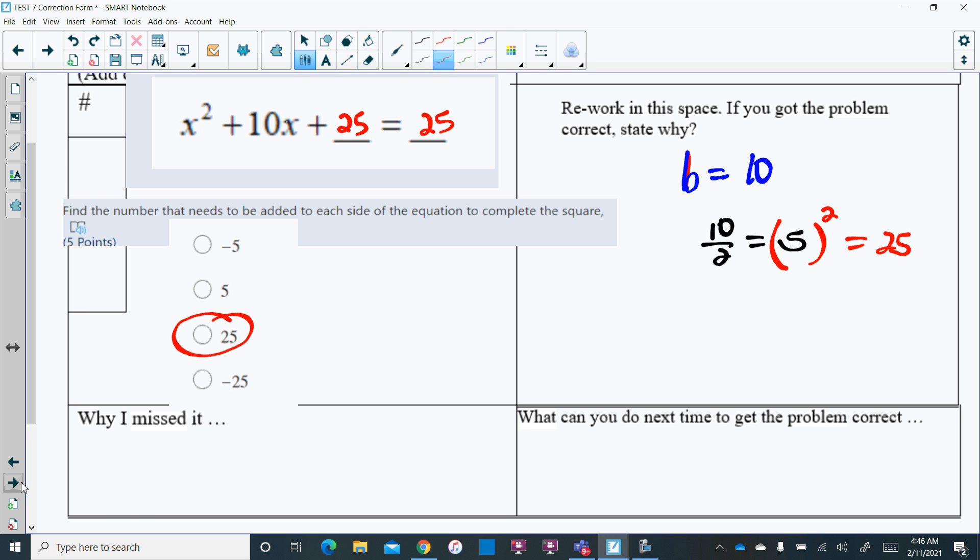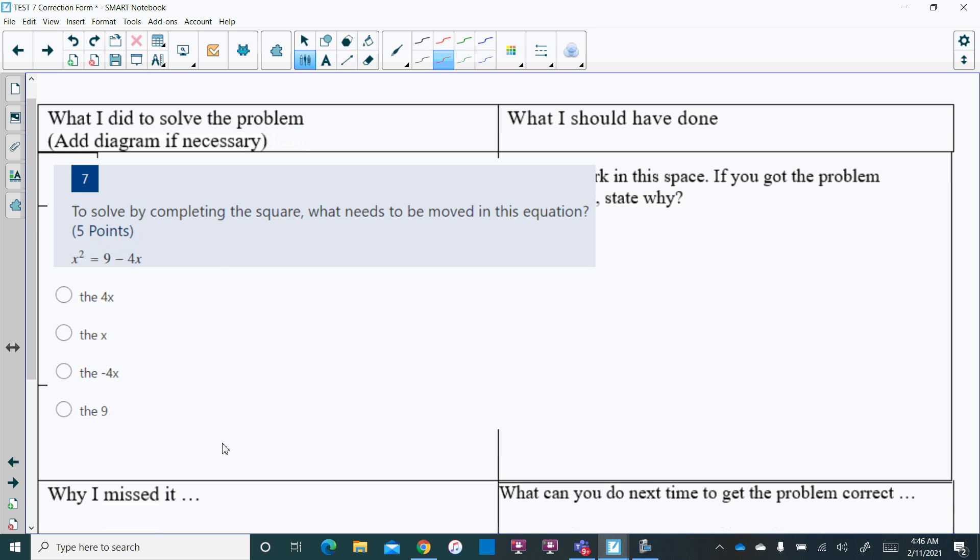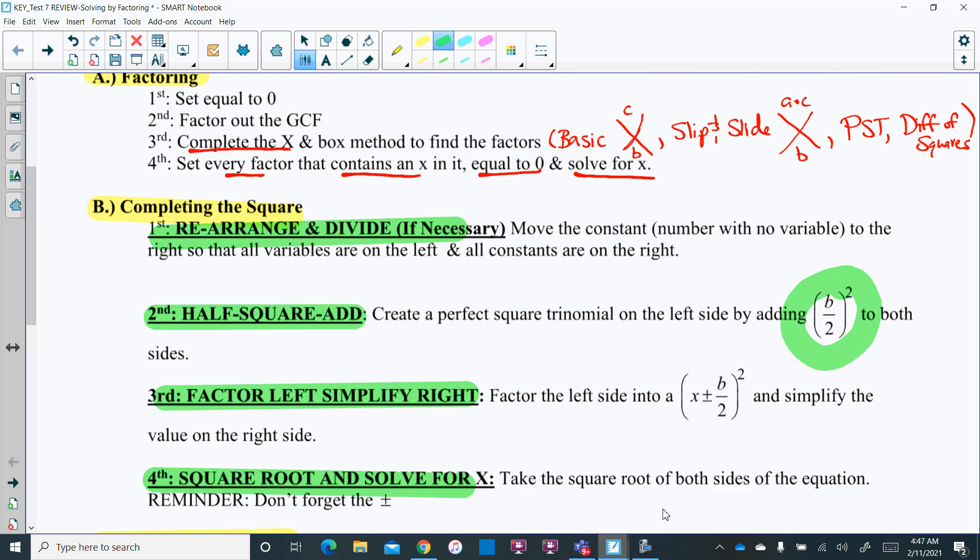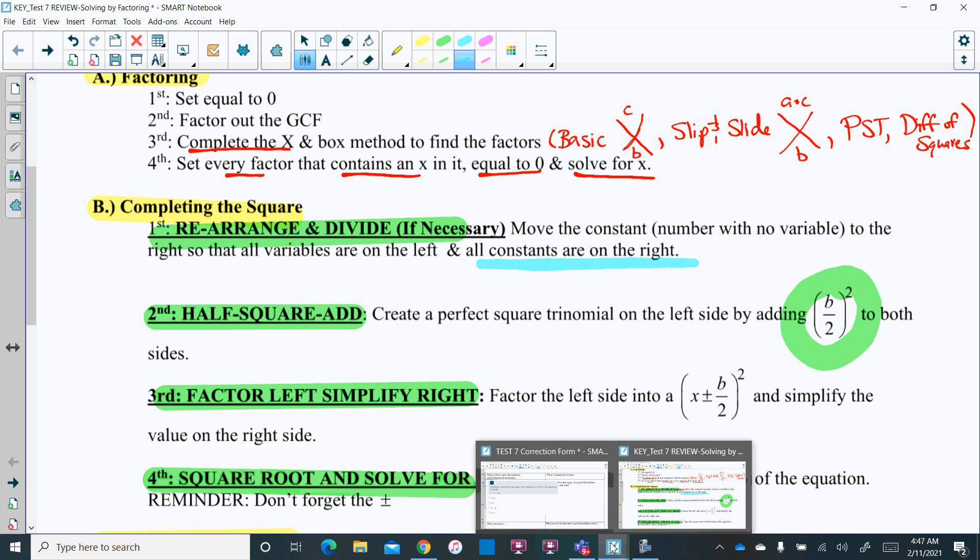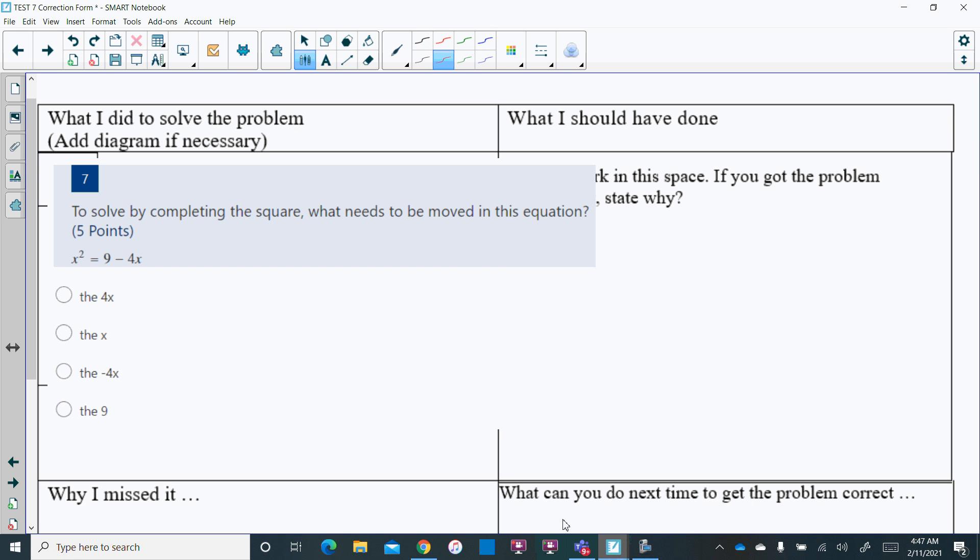Here, this is to solve by completing the square. What needs to be moved in this equation? In order to get a perfect square trinomial and to do completing the square, we had to recognize that we had to rearrange our equation so that all constants are on the right. We had to make sure it was in the right format. If I look at this problem right here, the equation should look like ax squared plus bx equals some type of constant on the right side of the equal sign.